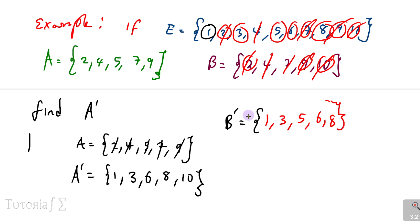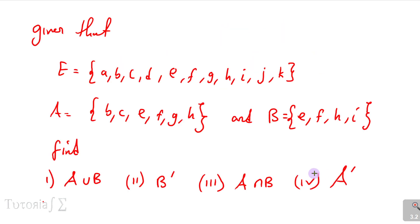That is the idea behind complement, intersection, and union. Now some practice questions: given the universal set has elements A, B, C, D, E, F, G, H, I, J, K; set A has elements B, C, E, F, G, H; and set B has elements E, F, H, I. Find: (1) A union B, (2) B complement, (3) A intersection B, (4) A complement.